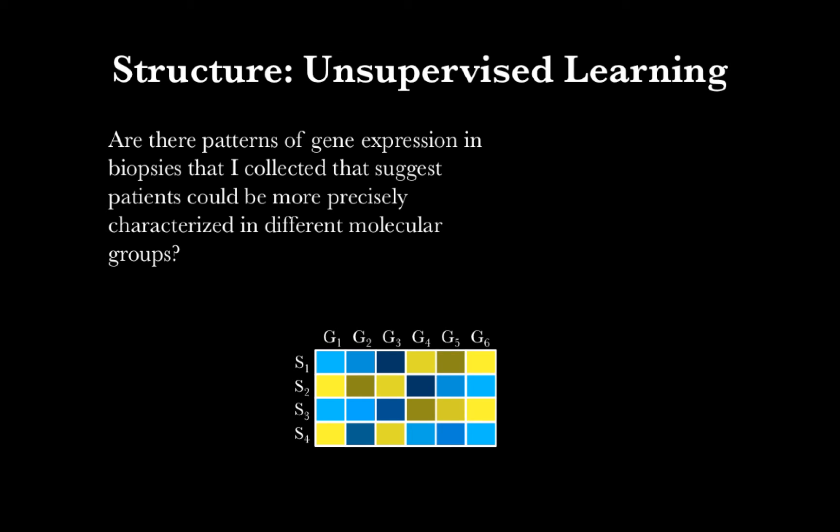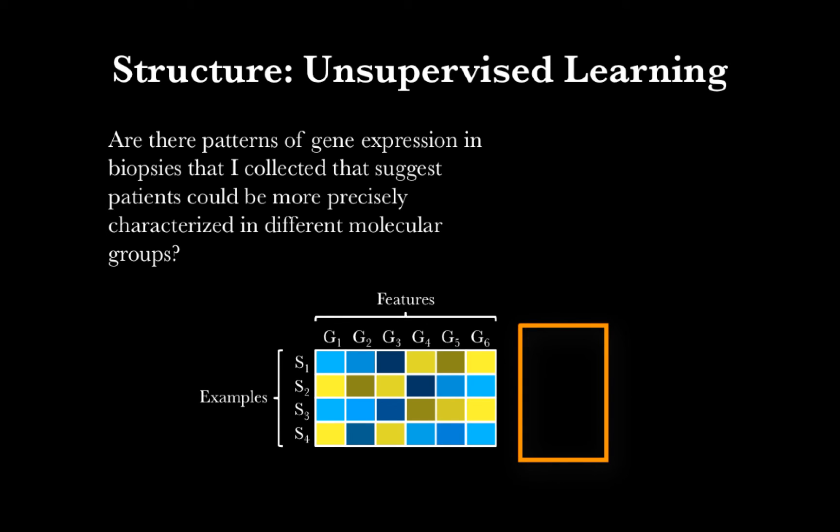Consequently, our samples, which are in rows, are still the examples that we're working with. The genes are still the features that we're using to distinguish those samples. However, unlike before, we no longer have labels. We don't know in advance how these samples should group.